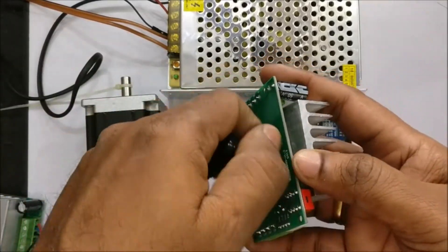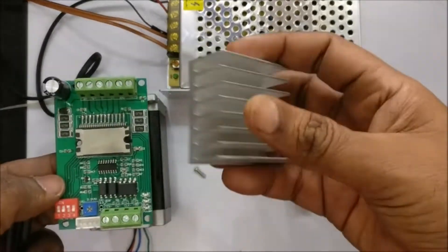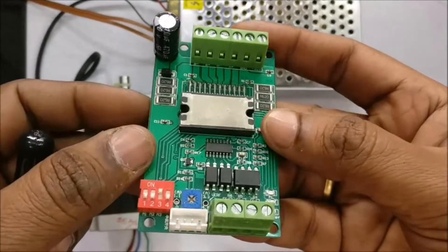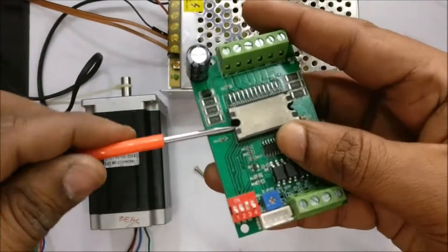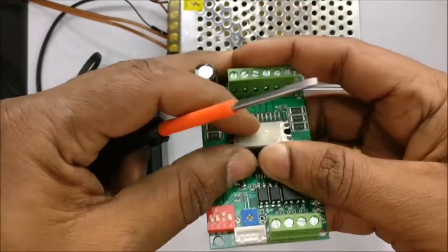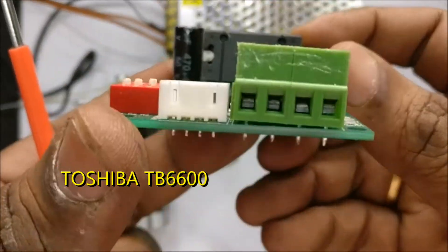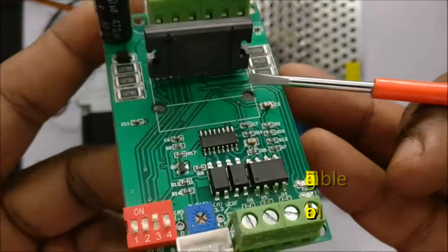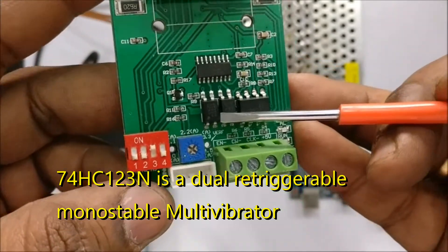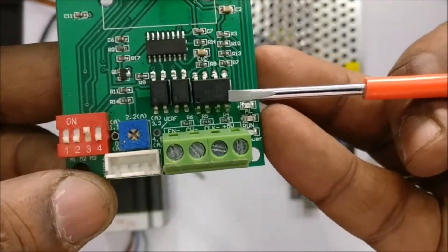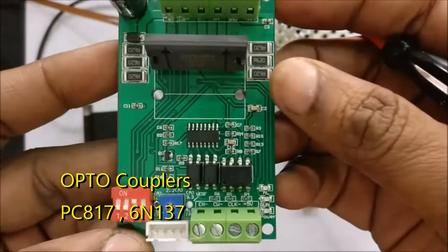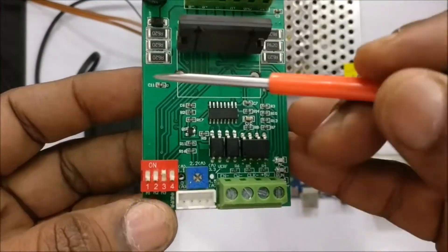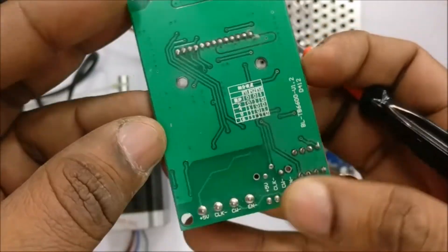If you remove the screws of the heat sink, you can see the Toshiba TB6600 IC. This Toshiba IC is a very powerful IC with 4 ampere capacity which can drive heavy stepper motors. On board there is 74HC123 which is monostable multivibrator and optocouplers are used so that isolated connection of phase is safely done.